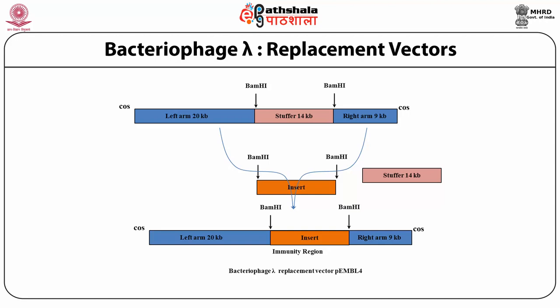The bacteriophage lambda cloning vector has a middle segment responsible for insertion and excision — the IE region — which can be replaced with foreign DNA using two BamHI sites present on either side of the IE region. In the cloning strategy, foreign DNA is put into the vector and then allowed to infect bacteria. In the presence of the IE region, the phage will integrate into the bacterial chromosome and continue the lysogeny cycle. But when the IE region is disrupted or replaced with foreign DNA, it will continue the lytic cycle and form plaques. This enables positive selection for recombinant phages.